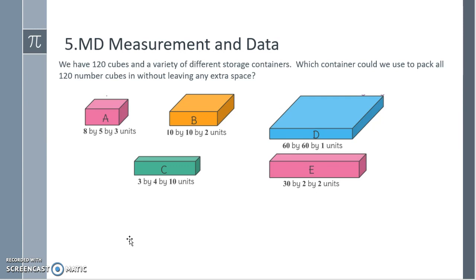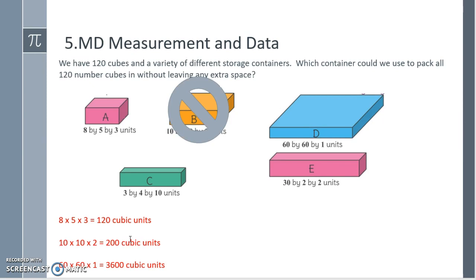We have 120 cubes in a variety of different storage containers. Which container could we use to pack all 120 number cubes in without leaving any extra space? Cube A is 8 by 5 by 3, so 8 times 5 times 3 is 120 cubic units. We could use storage container A. Storage container B is 10 by 10 by 2, that is 200 cubic units. That's too many, we can't use that one. Container D is 60 by 60 by 1. 60 times 60 is 3600 times one, way too big.